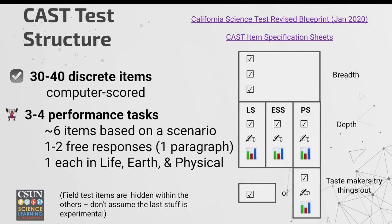On the CAST, the structure has 30 to 40 discrete items that are computer scored, and then three to four performance tasks that are given. Notice some field test items are also given within the test.